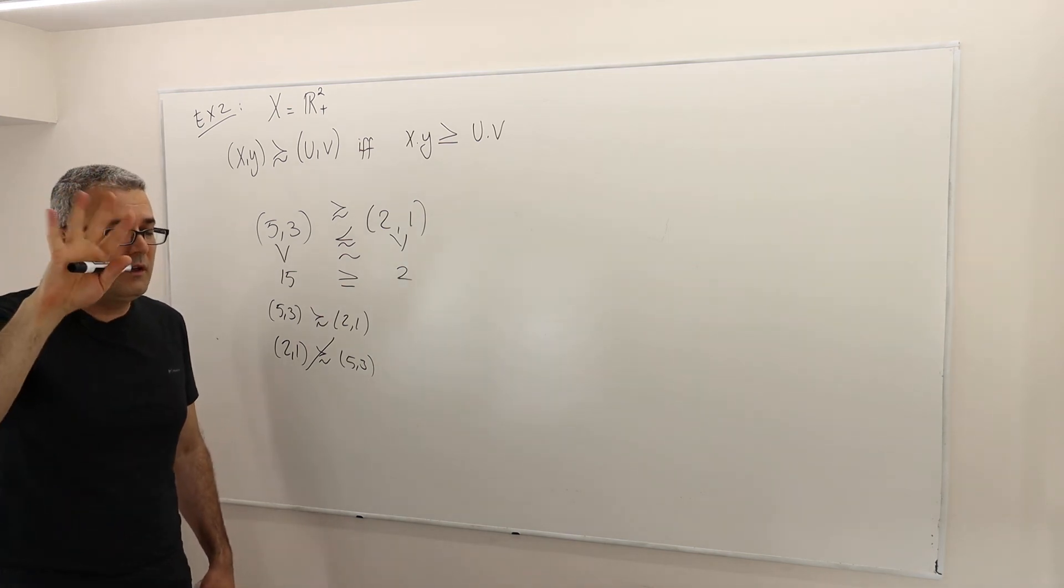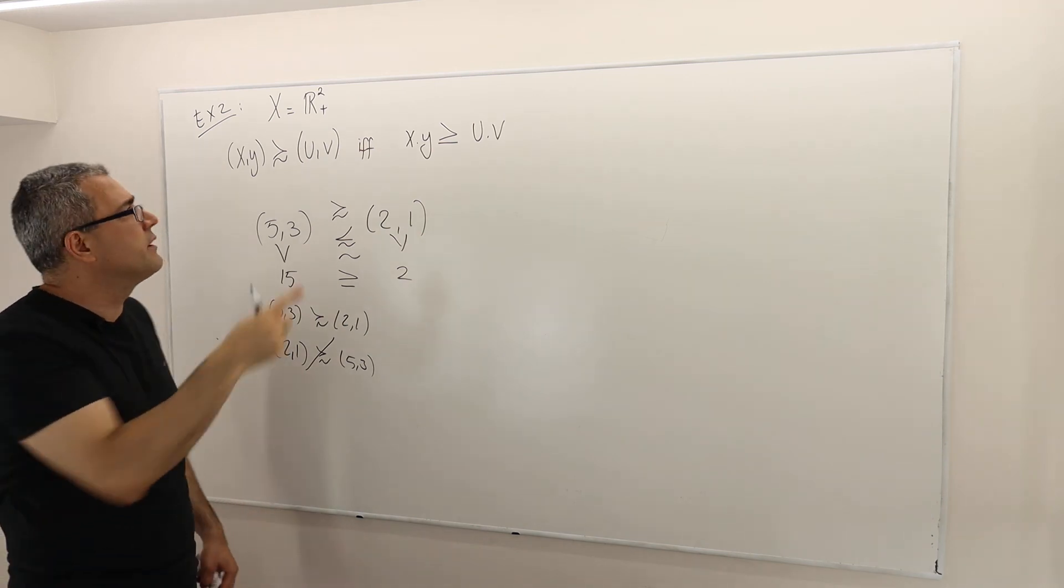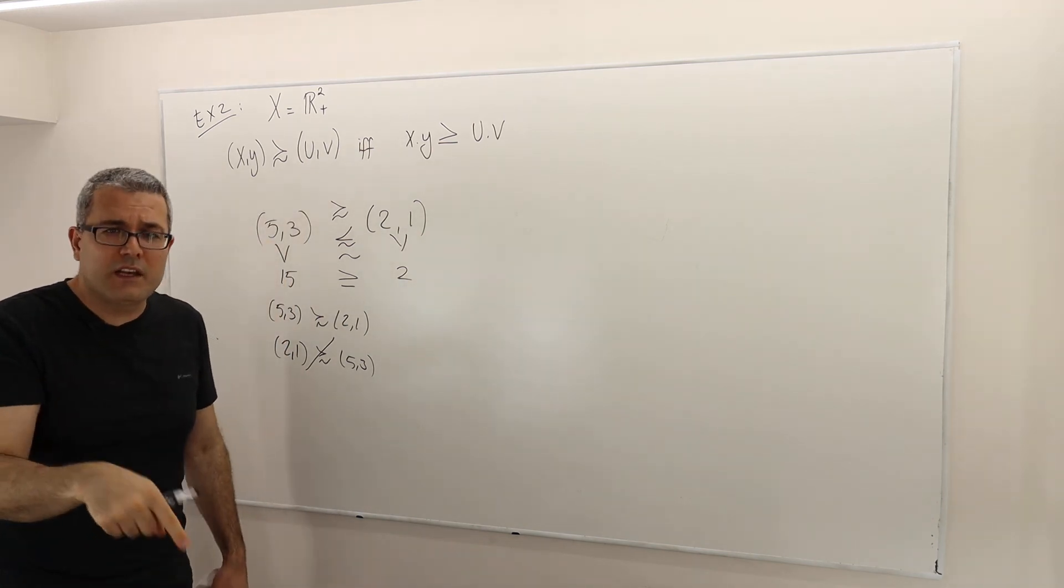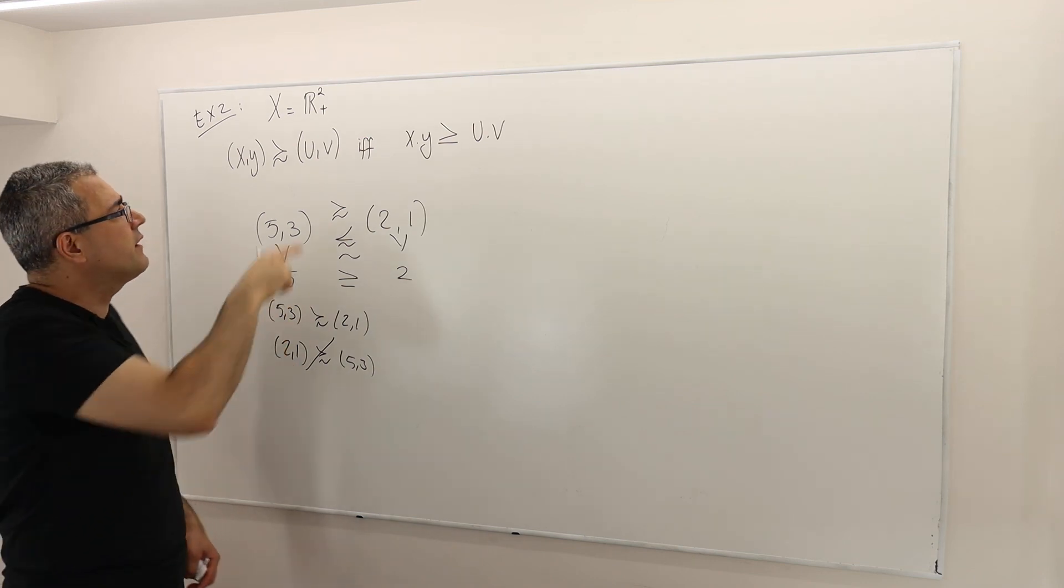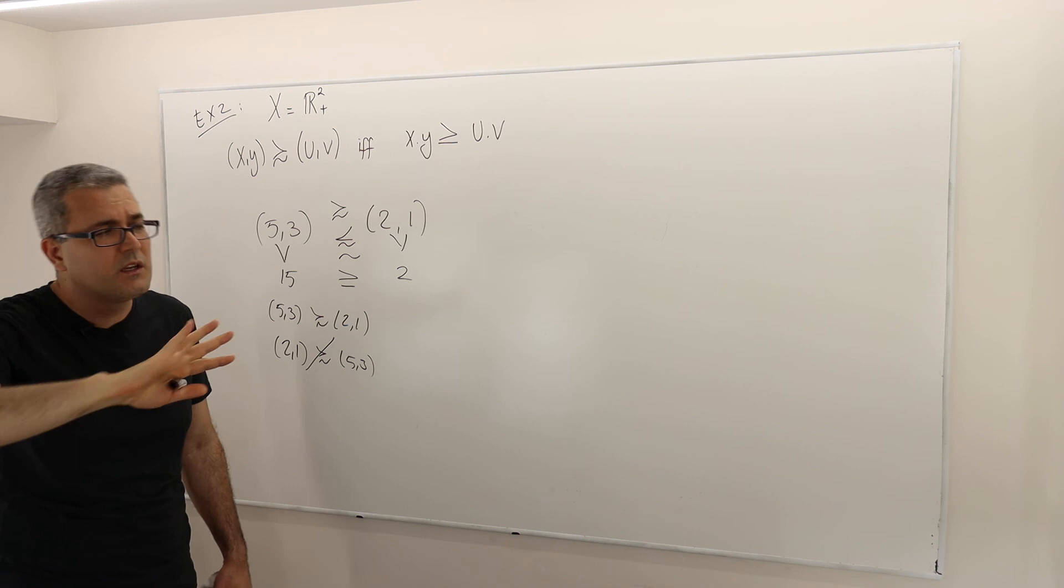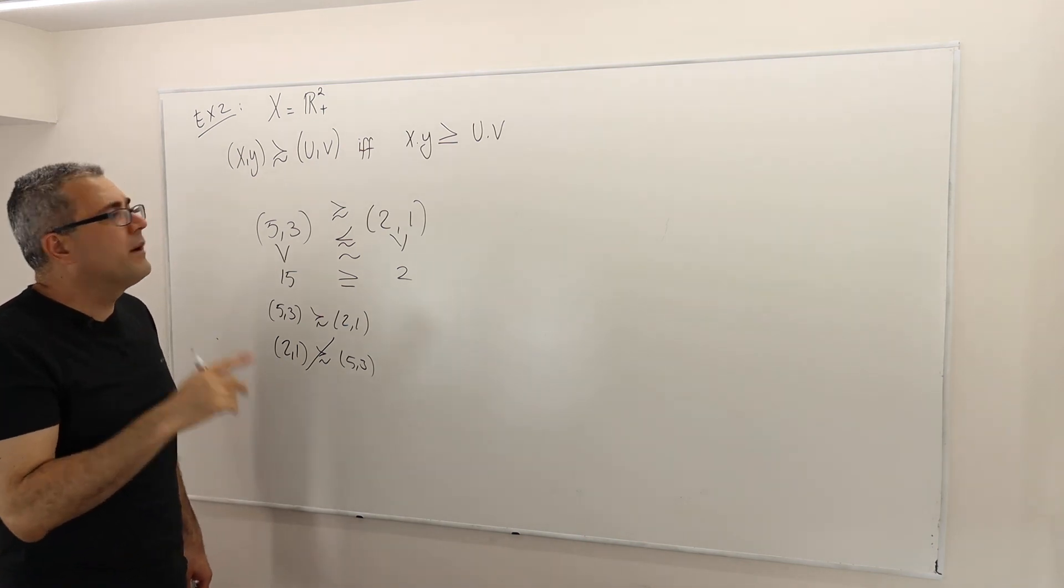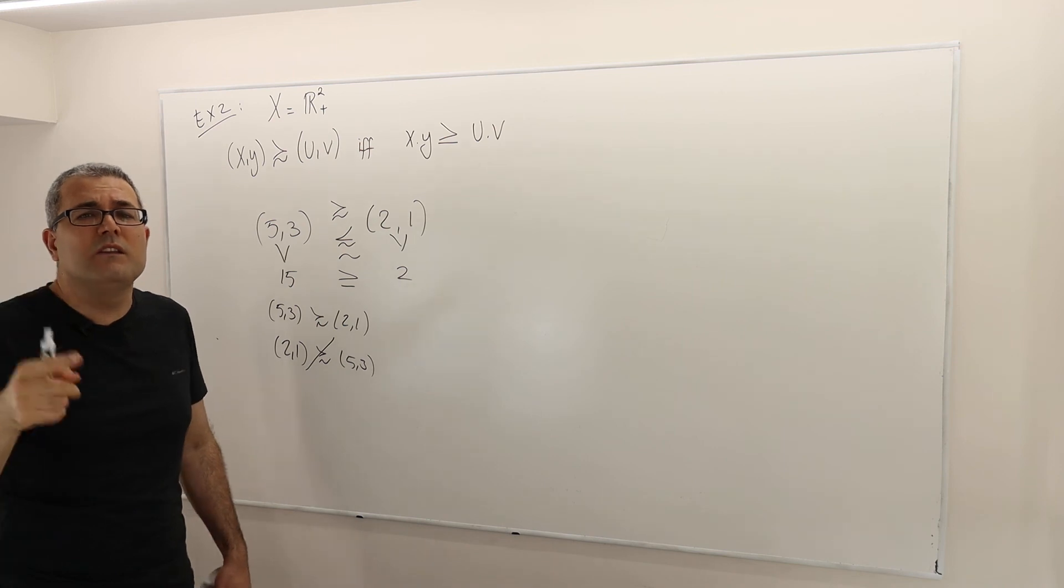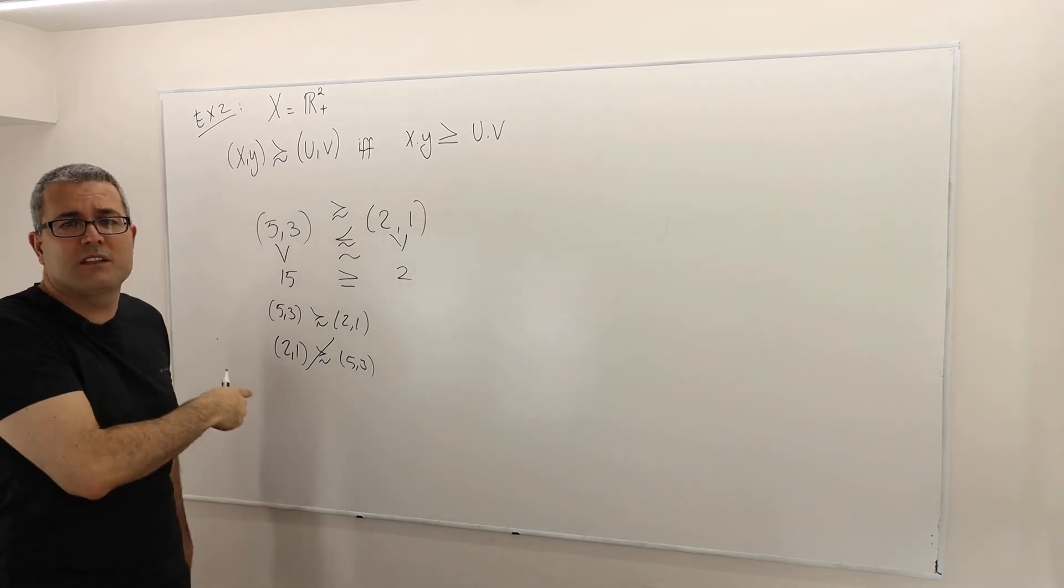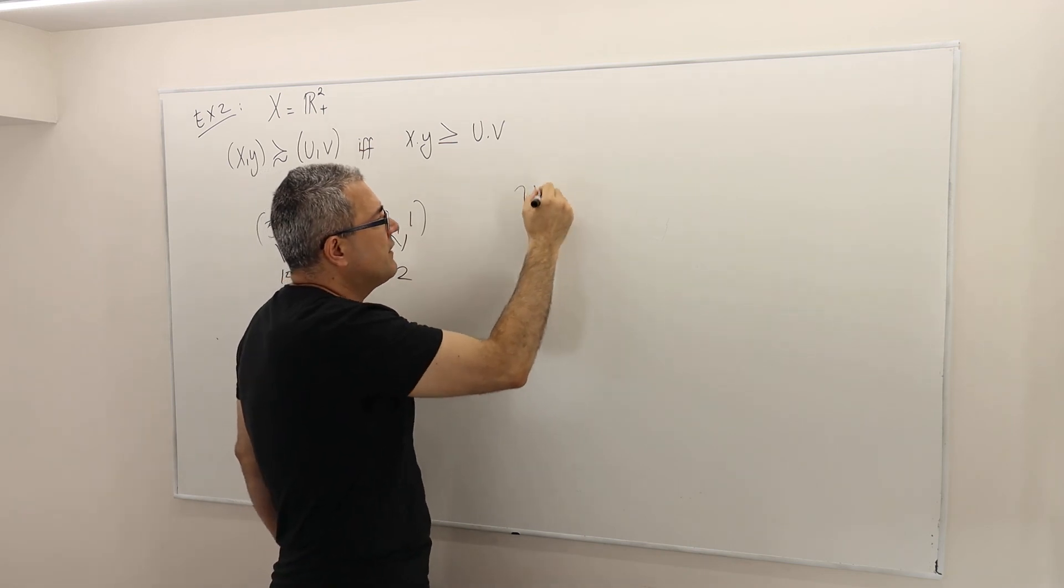If I define a reasonable choice behavior out of this, it actually satisfies condition alpha. And in fact, this preference relation is continuous. I can actually tell you a continuous utility function that represents this preference relation. And some of you may already see this.